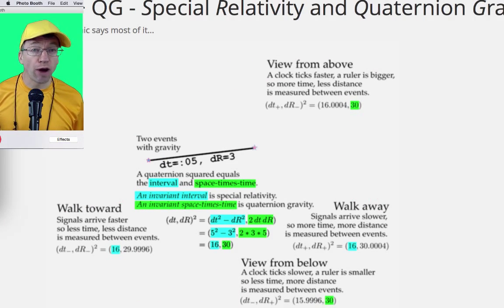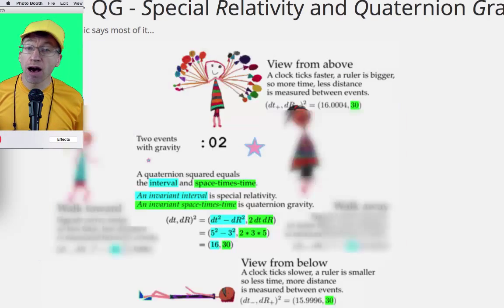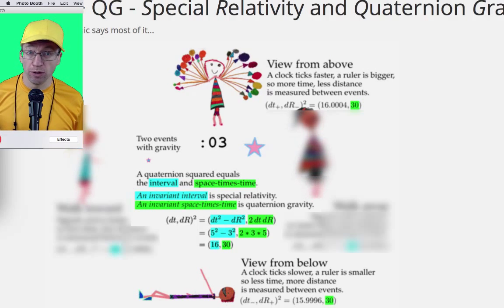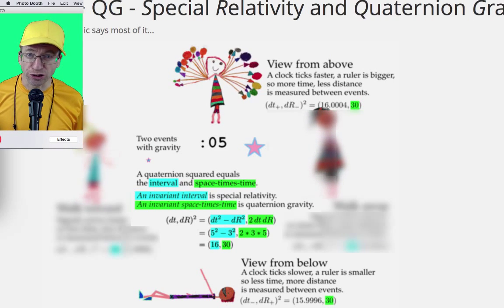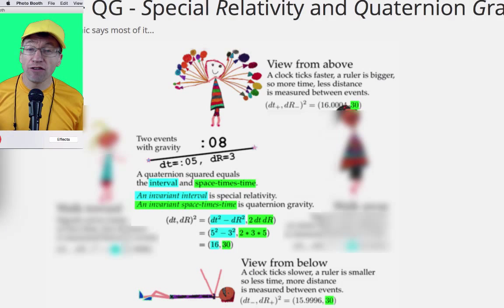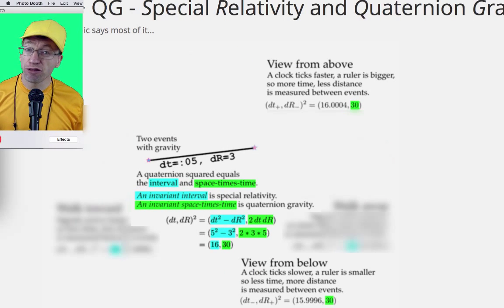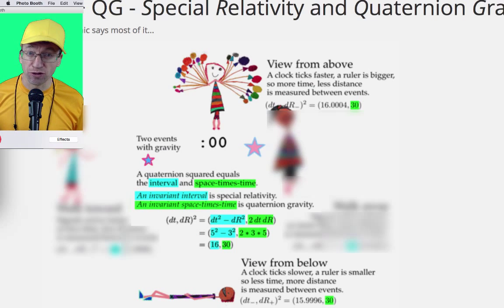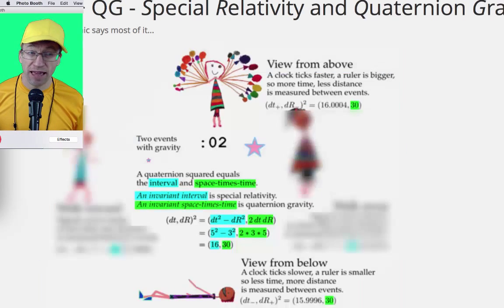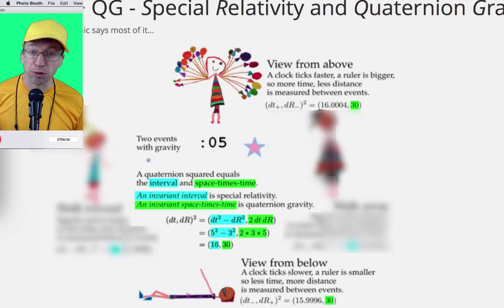I am quaternion gravity Doug in yellow. Focus on the measurements above and below — ignore the walkers. The folks above and below all have the same space times time value of 30 and agree with the Reference Observer about that value. And that is the heart of my quaternion gravity proposal.